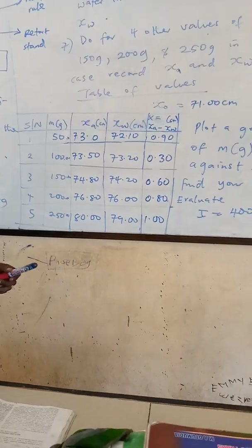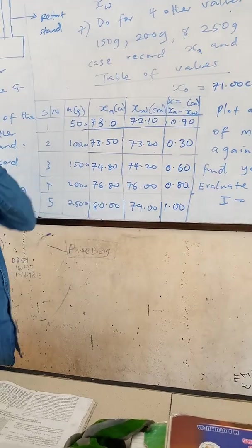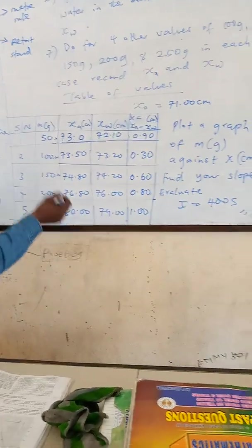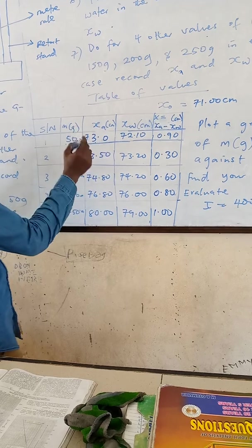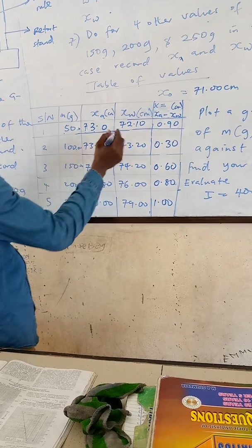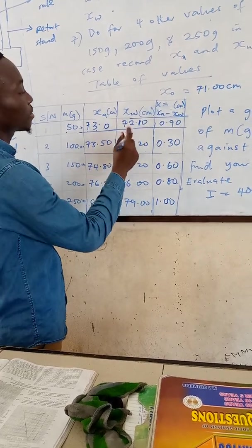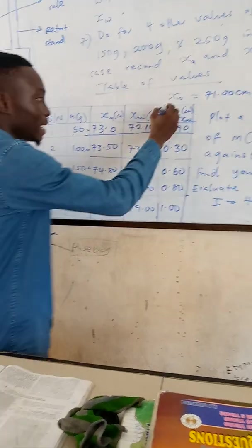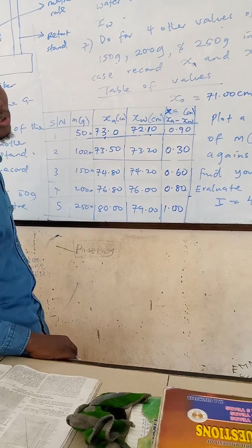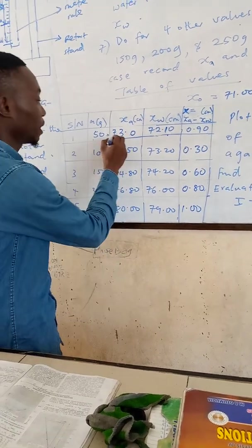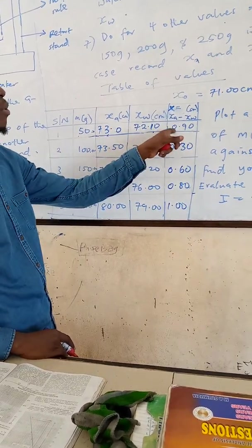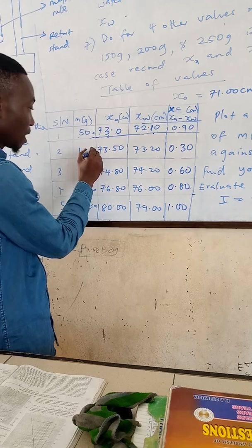Make sure you take the readings carefully so that you don't have mistakes along the line. So for 50 gram, my value for my X in air is giving us 73. Then for my X in water, it's giving us 72.10. So my X is going to be the difference between the X in air minus the X in water. The distance for the air is going to be greater than that of the water. In that case, when I subtract this from this, I'm going to get 0.90.